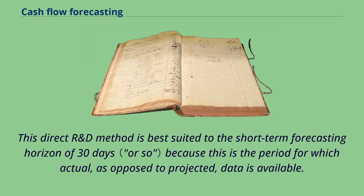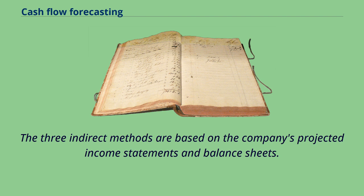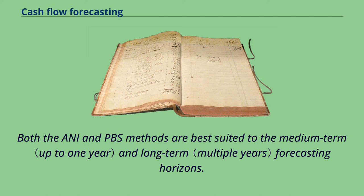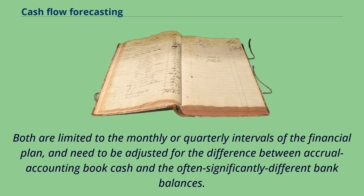This direct method is best suited to the short-term forecasting horizon of 30 days, because this is the period for which actual, as opposed to projected, data is available. The three indirect methods are based on the company's projected income statements and balance sheets. Both the IONI and PBS methods are best suited to the medium-term and long-term forecasting horizons, and are limited to the monthly or quarterly intervals of the financial plan. They need to be adjusted for the difference between accrual accounting book cash and the often significantly different bank balances.